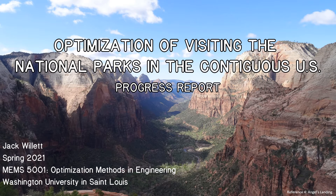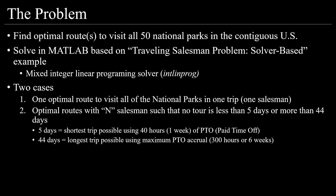Hello, this is Jack Willett and this is my progress report for optimization of visiting the national parks in the contiguous United States. The problem I'm solving is to find an optimal route to visit all 50 national parks in the contiguous U.S. This is solved using code based off MATLAB's traveling salesman problem example.